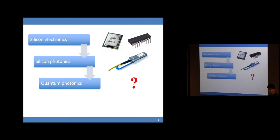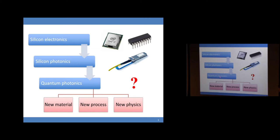Quantum mechanics has been developed for almost a century, more than a century. But how to use quantum technology in daily life — that's still a question mark. There are some directions: quantum computing, quantum communications, quantum imaging, quantum sensing. But based on my knowledge, there is no well-developed commercial product right now. This is still a very active and cutting-edge research topic. In order to do this, we need to do something new. People are trying to look at new materials, develop new processes, and even involve some new physics.